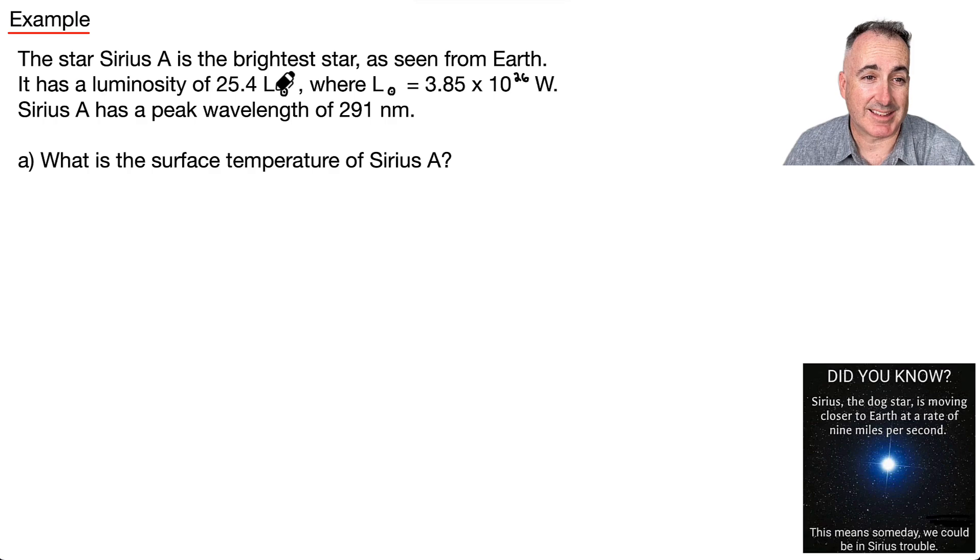So we're also told that Sirius A has a peak wavelength of 291 nanometers. Watch out for nanometers. Those aren't just meters. Those are 10⁻⁹. And the question is for part A, what's the surface temperature? Well, how do we find temperature from a peak wavelength? We use Wien's displacement law. So this λₘₐₓ times T equals 2.90 × 10⁻³. I'm just going to use that.